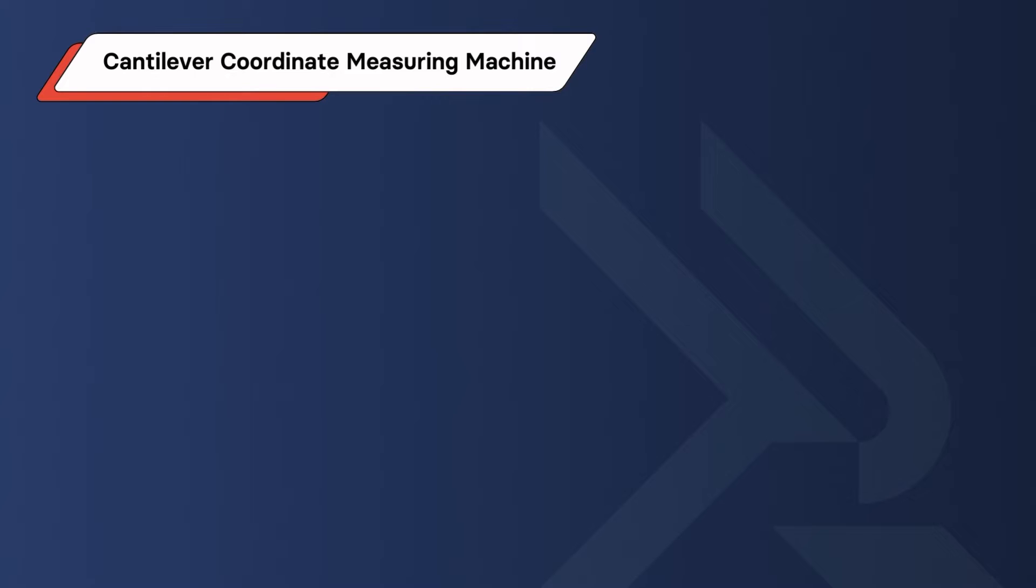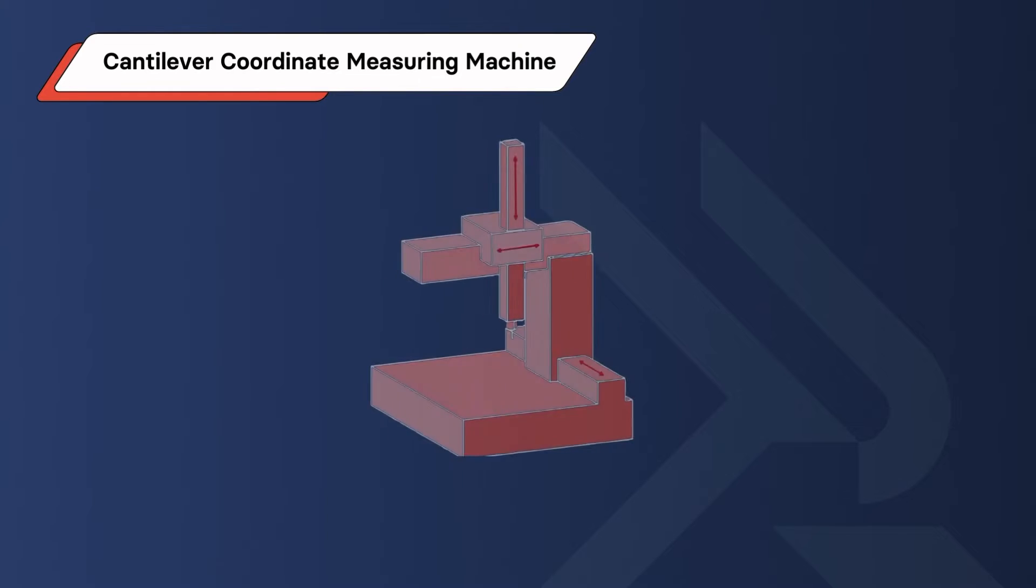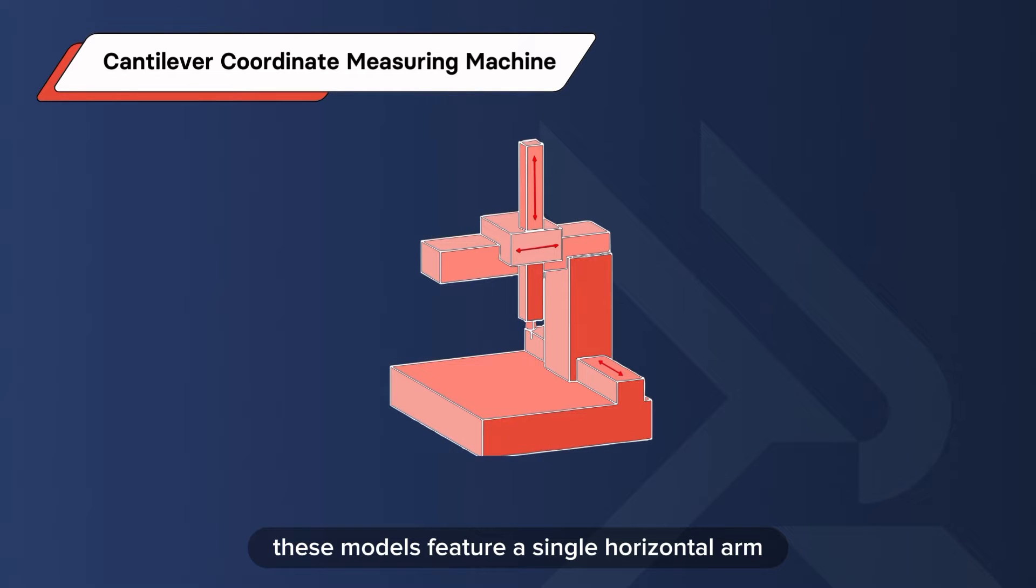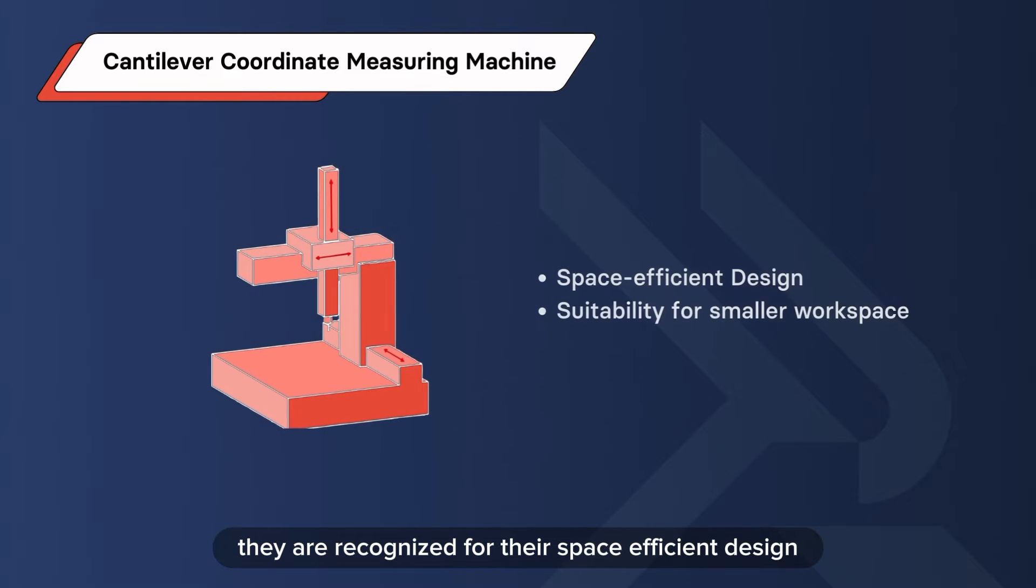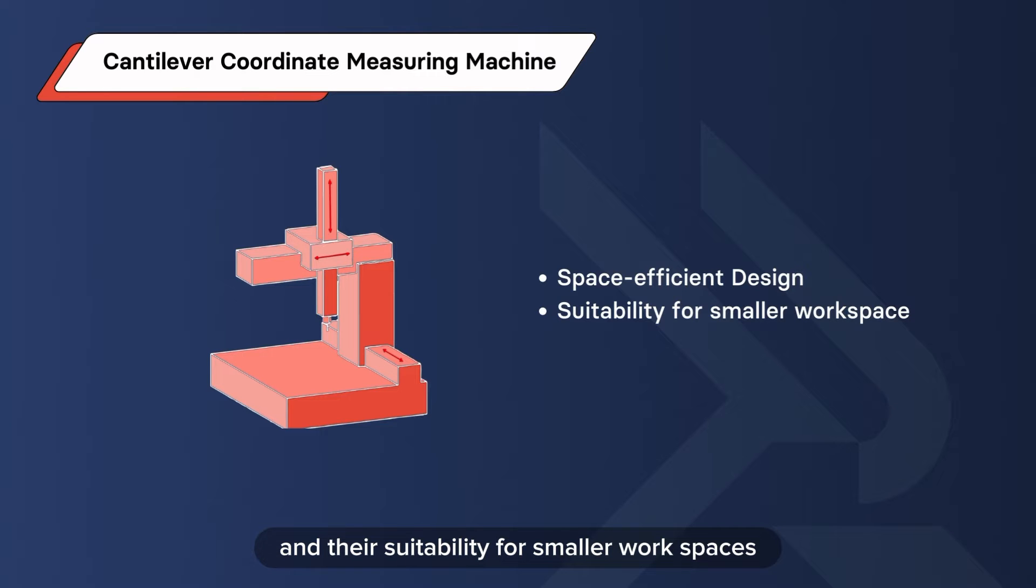Cantilever Coordinate Measuring Machine. These models feature a single horizontal arm that extends to support the bridge on just one side. They are recognized for their space-efficient design and their suitability for smaller workspaces.